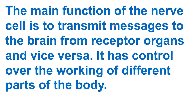The main function of the nerve cell is to transmit messages to the brain from receptor organs, and vice versa. It has control over the working of different parts of the body by sending signals from different parts to the brain and from the brain back to different parts. That's all for today. Thank you.